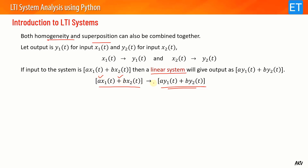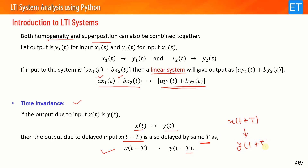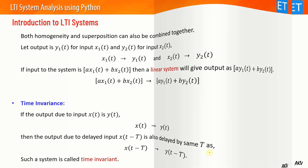For time invariance: if the output due to input x(t) is y(t), then the output due to delayed input x(t − T) is also delayed by the same T. This means if your input is delayed by time T, the output will also be delayed by the same time. The same is true for time advance: if input is x(t + T) then output is y(t + T). This property says that your system parameters are not changing with time.